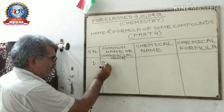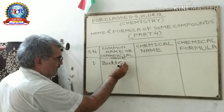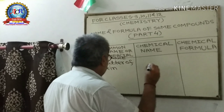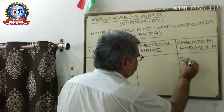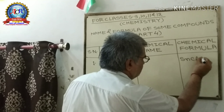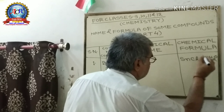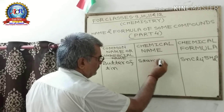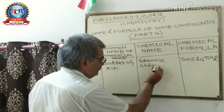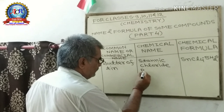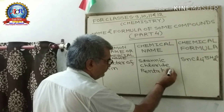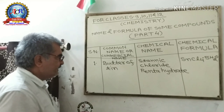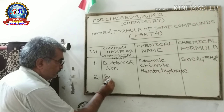First: Butter of Tin. The chemical formula of Butter of Tin is SnCl₄·5H₂O. Its chemical name is Stannic Chloride Pentahydrate.